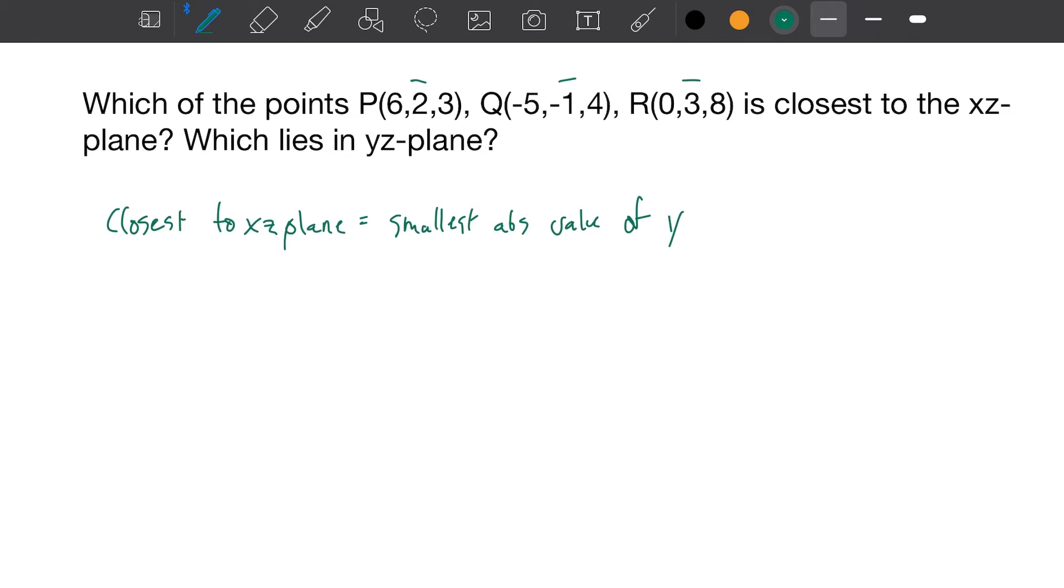Looking at these, 2, negative 1, and 3, the smallest value is Q at (-5, -1, 4).